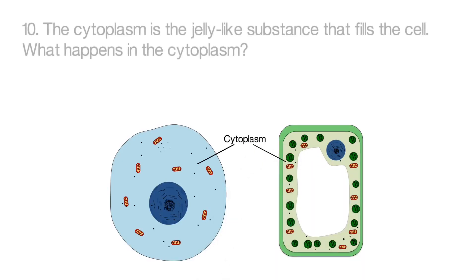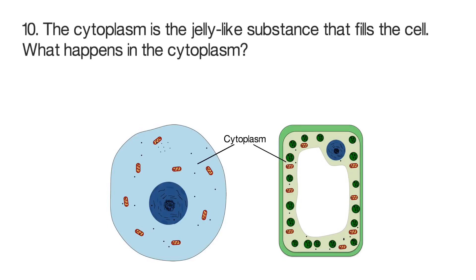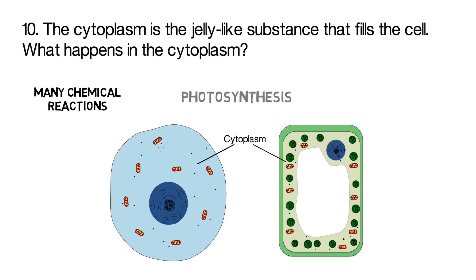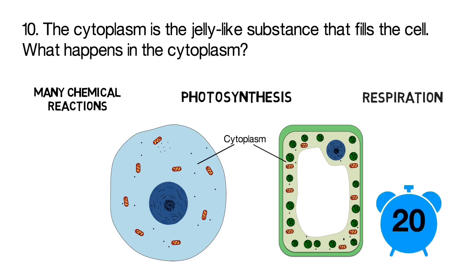Finally, question number ten. The cytoplasm is the jelly-like substance that fills the cell. What happens in the cytoplasm? Is it where many chemical reactions occur? Is it where photosynthesis happens? Or is it where respiration happens?